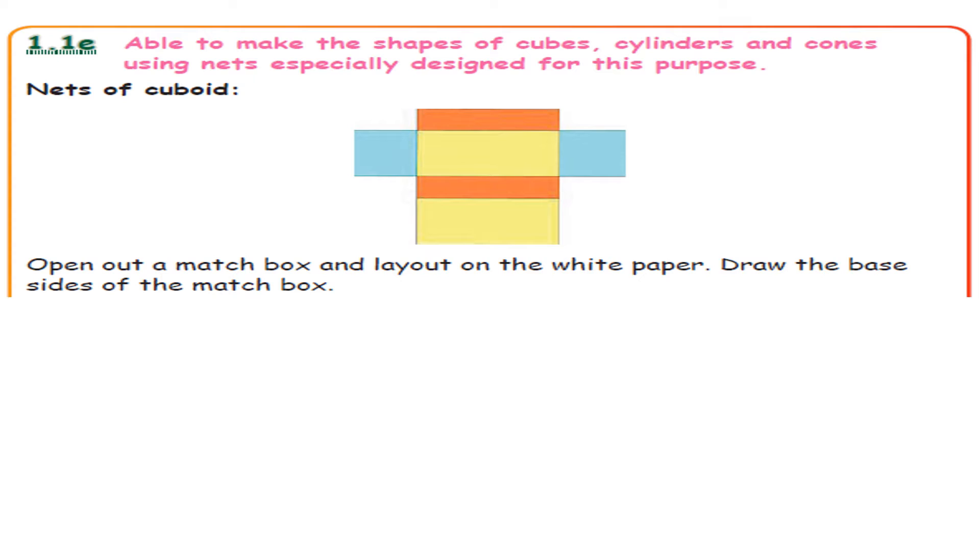We have already seen up to page number 13. This is the 14th page, section 1.1e: able to make the shapes of cubes, cylinders and cones using nets specially designed for this purpose. Net of cuboid — what is a net? It is a sort of plan to make shapes of cubes, cylinders and cones. See the plan of a cuboid.